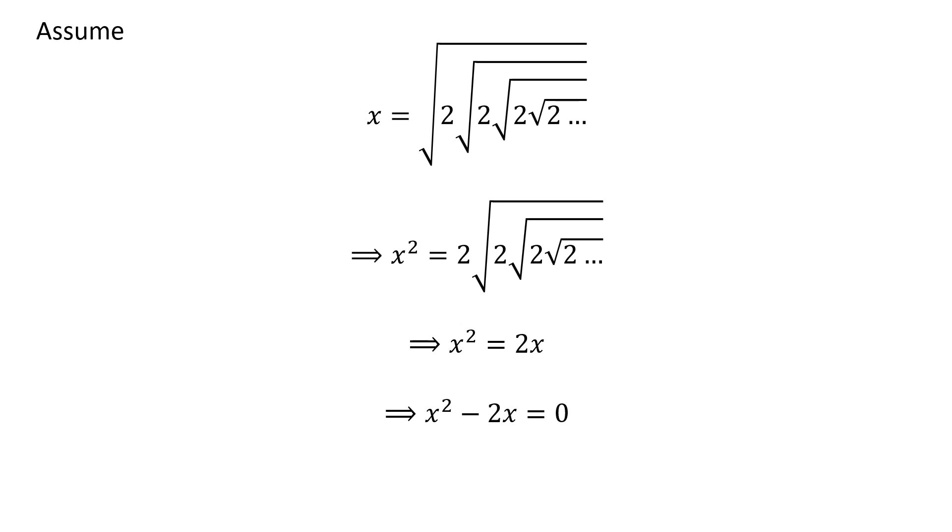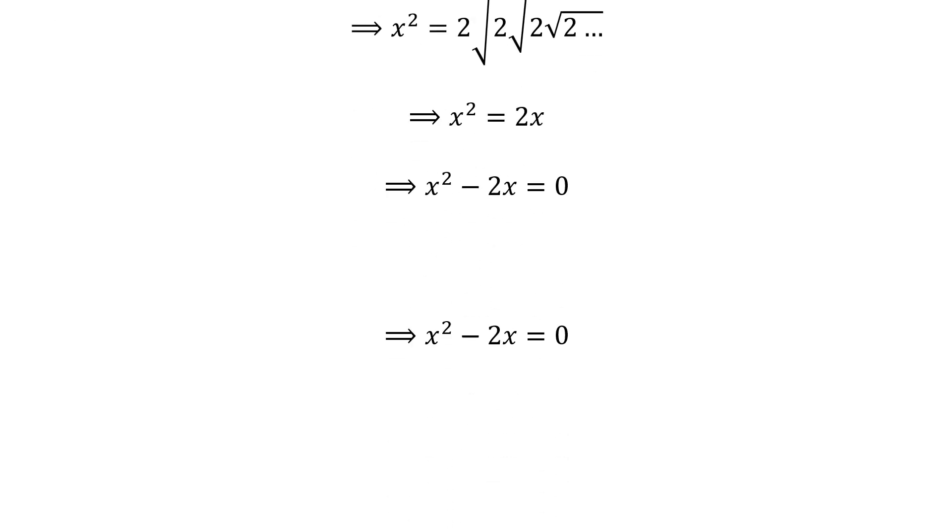Subtracting 2 times x to both sides of the above equation, we get square of x minus 2 times x is equal to 0. Taking out the common factor x, we get x times x minus 2 is equal to 0.